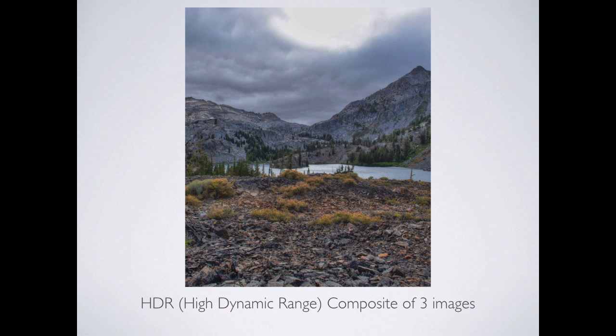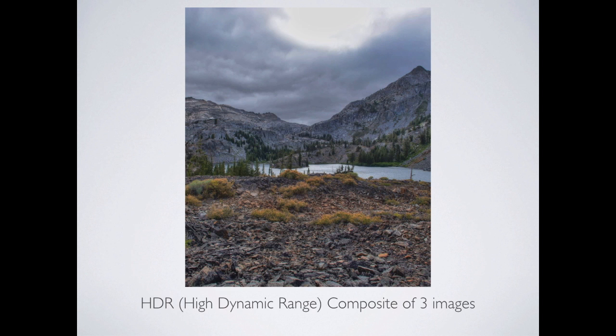Aperture and shutter speed have an inverse relationship: half the shutter speed equals two times the aperture to get the same amount of light in. So f11 at 1/60th of a second is equivalent to f8 at 1/125th of a second. Do you need to remember this stuff? No — your camera will do this for you automatically.